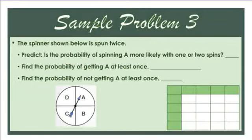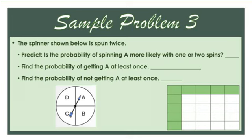Next example: the spinner is spun twice. Is the probability of spinning A more likely with one or two spins? If you spin it once, you only have one out of four chances. The more times you spin it, the better chance you have of landing on A. So it would be more likely with more than one spin.